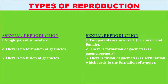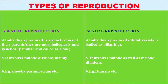In sexual reproduction there is fusion of gametes, that is fertilization, which leads to the formation of a zygote. In asexual reproduction, individuals produced are exact copies of their parents — morphologically and genetically similar — and are called clones. In sexual reproduction, individuals exhibit variation and are called offspring. This is the most important characteristic of sexual reproduction: it brings variation. Asexual reproduction involves mitotic divisions mainly, while sexual reproduction involves both mitotic and meiotic divisions. Examples of asexual reproduction are amoeba and paramecium; for sexual reproduction, humans.